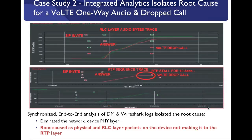We then looked at the RLC layer. Once the device receives packets at the physical layer, it strips off the headers, reassembles and resegments, then sends it to the RLC layer. The RLC layer trace shows that when you see a linear line, you're steadily getting packets from the physical layer to the RLC layer. We see a constant progression of RLC layer packets coming into the phone for both originating and terminating phones, even right before the call drop. So as far as audio and media packets are concerned, the phone has been receiving these packets fine at both the physical layer and the RLC layer.